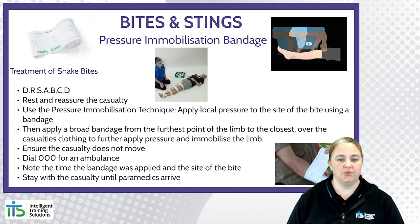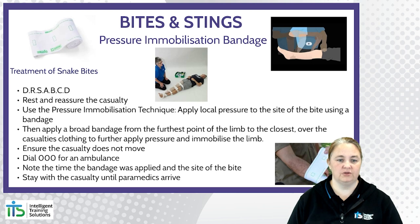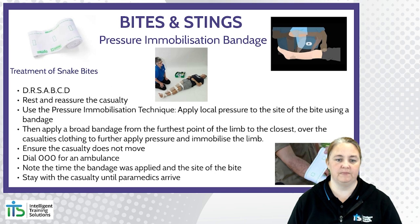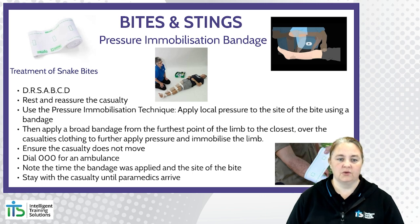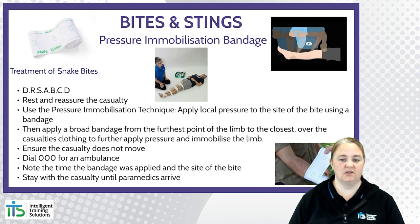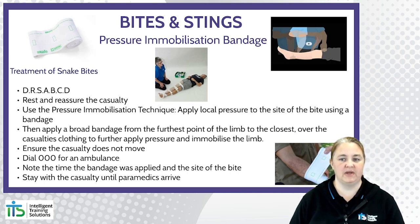Then apply a broad bandage from the furthest point of the limb to the closest, over the casualty's clothing, to further apply pressure and immobilisation to the limb. Ensure the casualty doesn't move — this may also involve splinting a limb. Call 000 for an ambulance, note the time the bandage was applied and the site of the bite, and stay with the casualty until paramedics arrive.